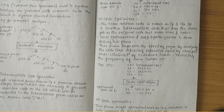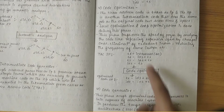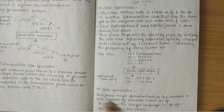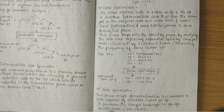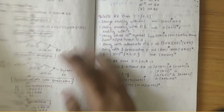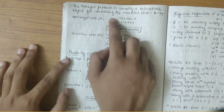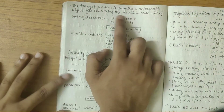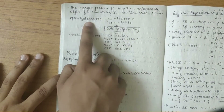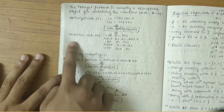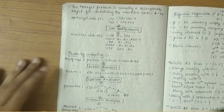The final phase is the code generator. This phase accepts optimized code as its input and converts it into a sequence of machine instructions as output. It produces the target language for a specific architecture, be it CISC or RISC. The target program is usually a relocatable object file containing the machine code. Optimized code is fed as input to the code generator and machine code is obtained as output.